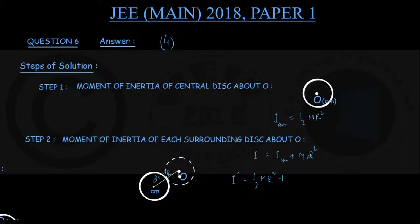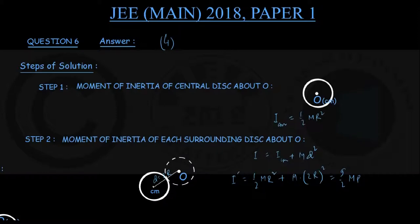We want the moment of inertia about a normal axis through point O, so d = 2r. This gives: I′ = (1/2)mR² + m(2r)² = (1/2)mR² + 4mR² = (9/2)mR². So while the central disk's moment of inertia about O is (1/2)mR², for each of the 6 surrounding disks the moment of inertia about O is (9/2)mR², thanks to the parallel axis theorem.